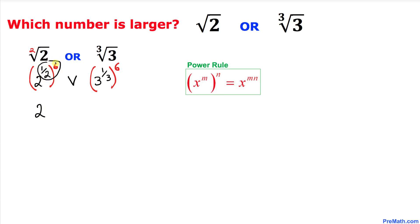times this 6. We're going to be using this power rule, so that is going to give us power 3. Versus on this side, 3 power 1/3 times 6 is going to give us 2. And now this 2